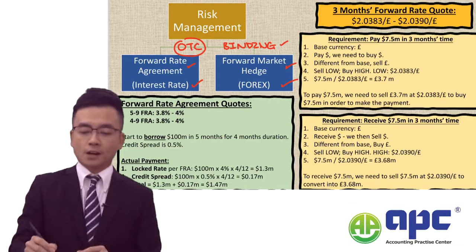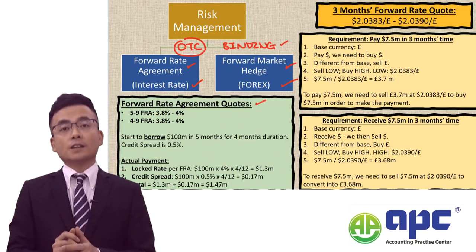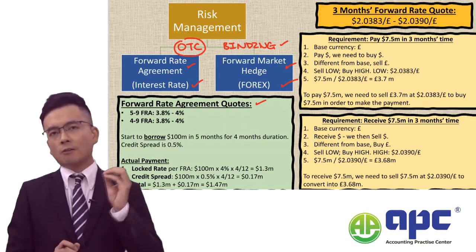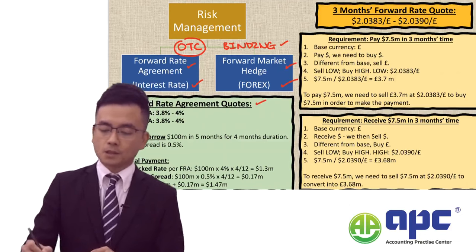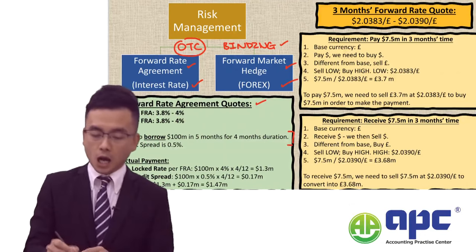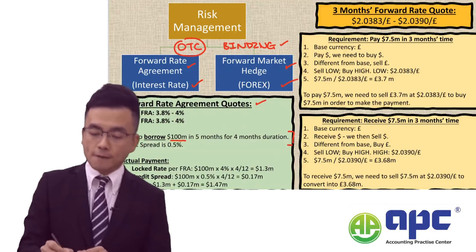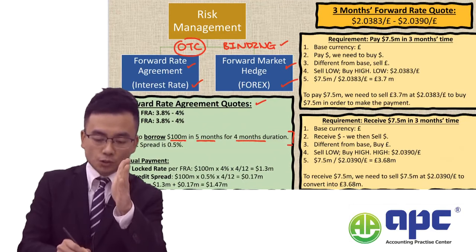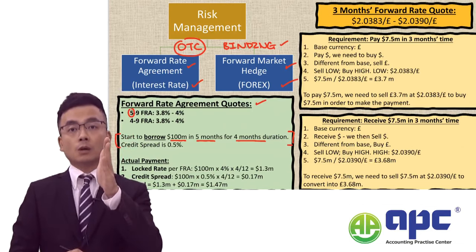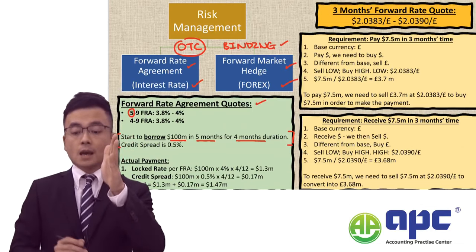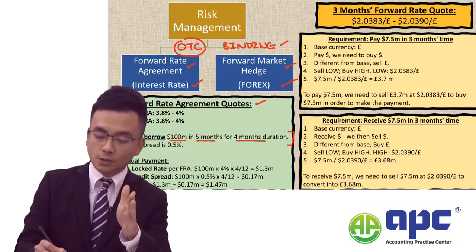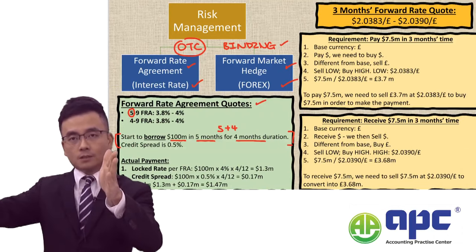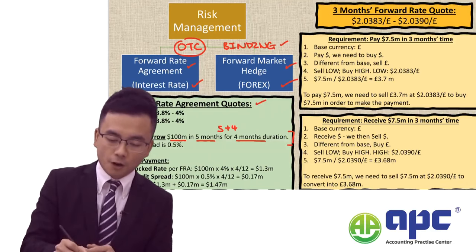Let's look at the FRA. In the exam, you may see a quote for the FRA. Now, let's create a scenario. We may be starting to borrow $100 million in 5 months' time for a duration of 4 months. This means we will start in 5 months, so we choose the FRA quote starting with 5. And because the duration is 4 months, that's 5 plus 4, starting from 5 months up to 9 months — so 5 to 9.